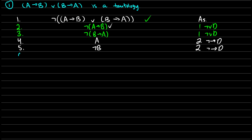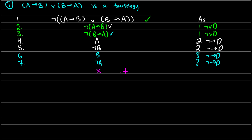Now in lines six and seven, we repeat the same thing with not (B → A), which gives us B and not-A, from line three — that's not-arrow decomposition. This is incredibly convenient because not only do we have one contradiction with A and not-A, but we have another contradiction with not-B and B. So at this point our branch is closed, and therefore we know that what we started with is a tautology.